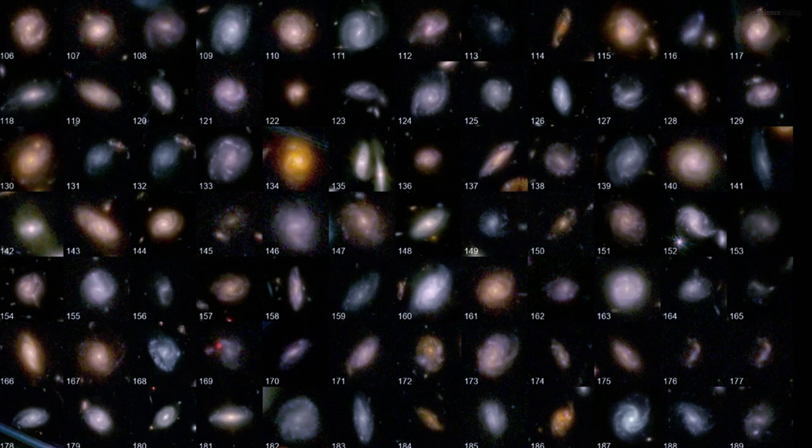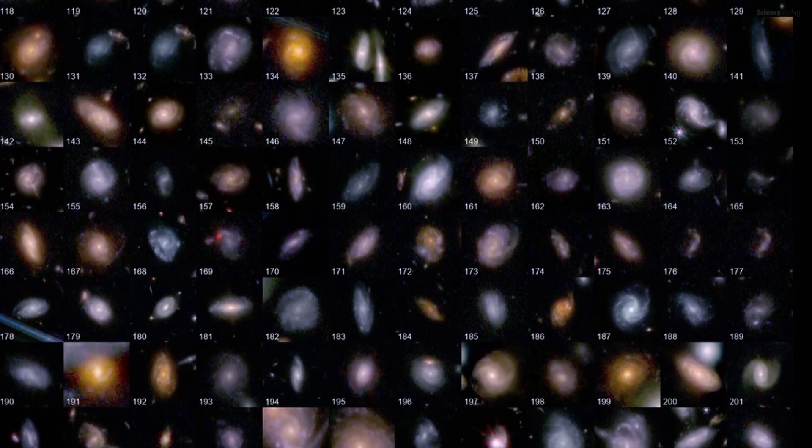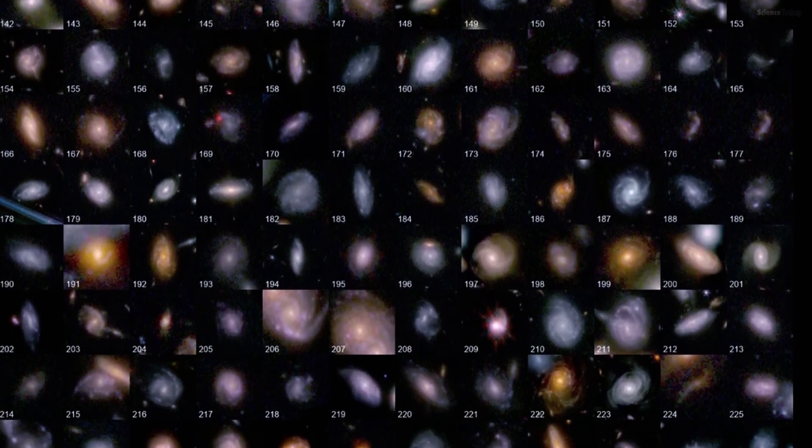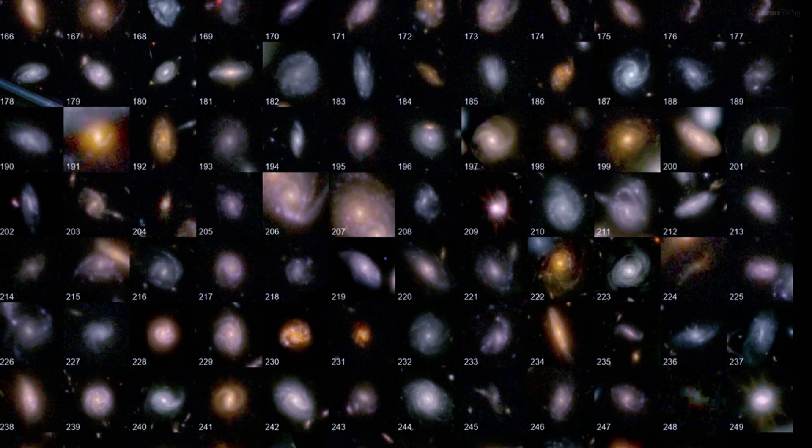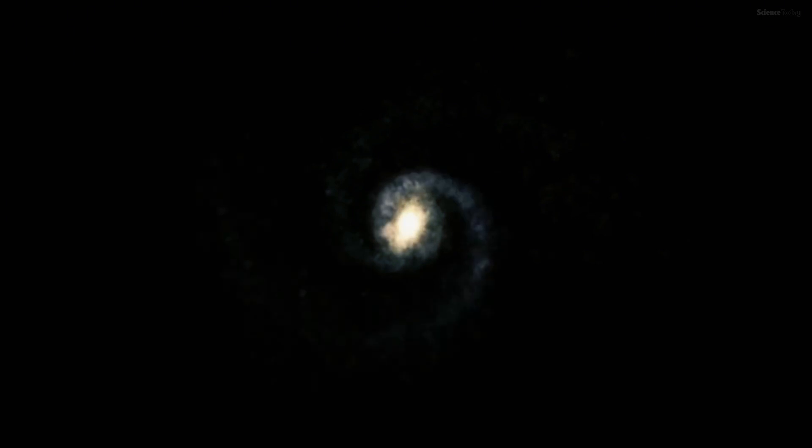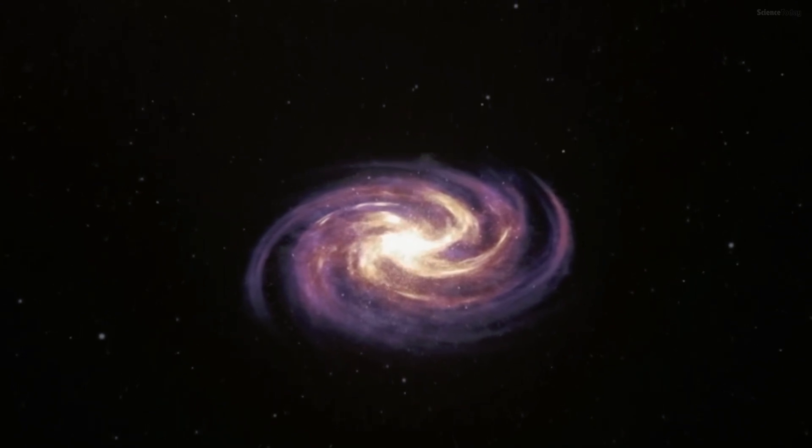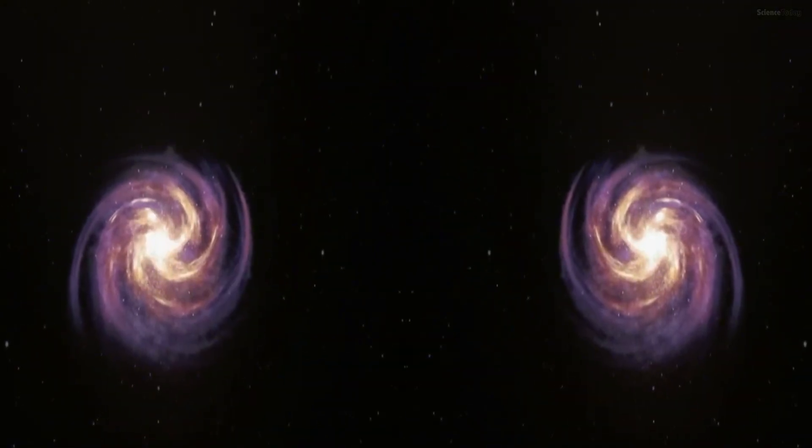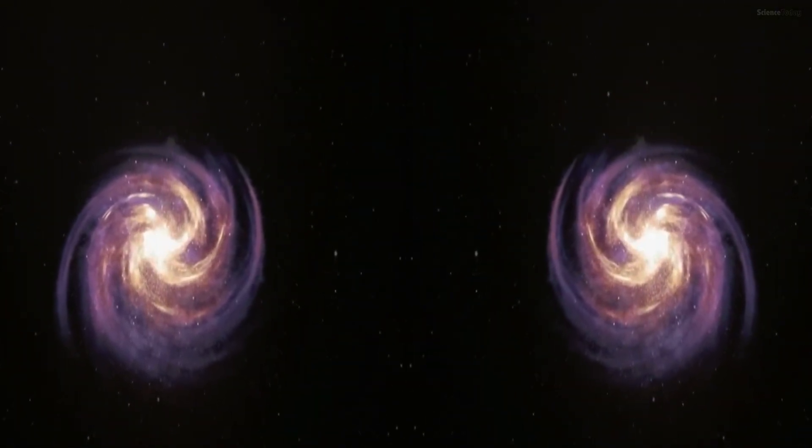To understand this, scientists studied about 260 spiral galaxies across different regions of the universe. They analyzed how light intensity changed from a galaxy's center outward, allowing them to determine spin direction. They even mirrored images left to right to eliminate human or machine bias.